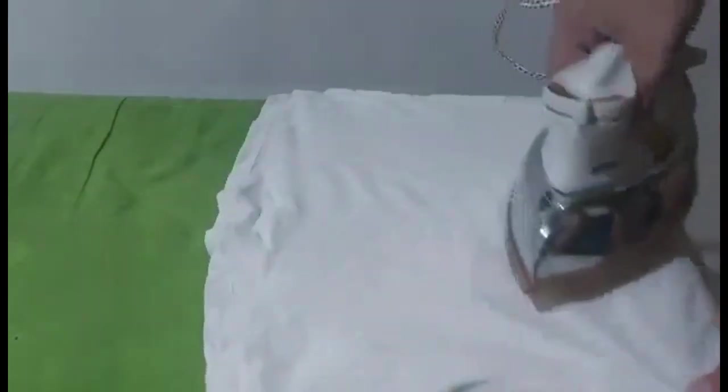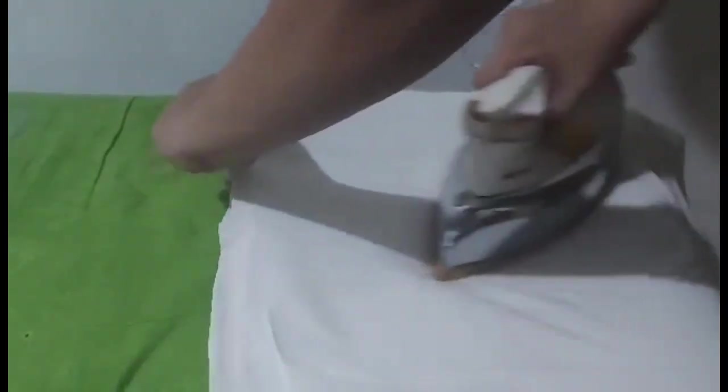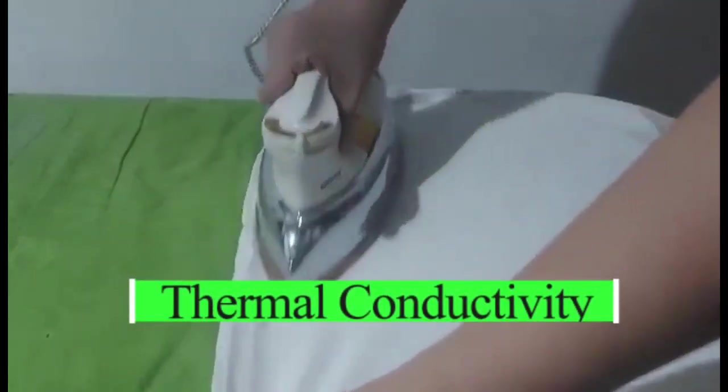As the current flows in the flat iron, it will generate heat and transfer to the bottom metal plate of flat iron, which is also made of metal. This ability of material that conducts heat is called thermal conductivity.